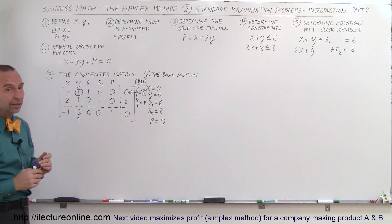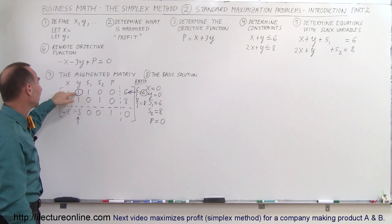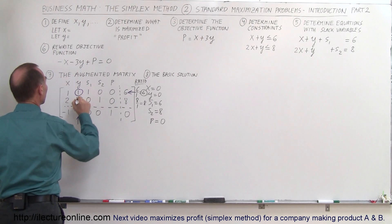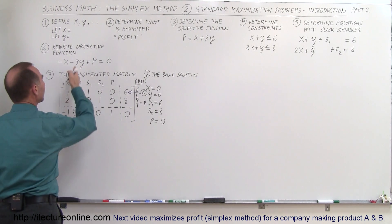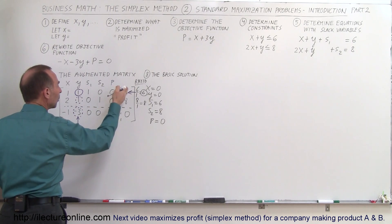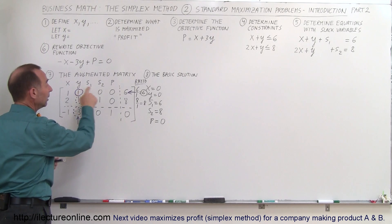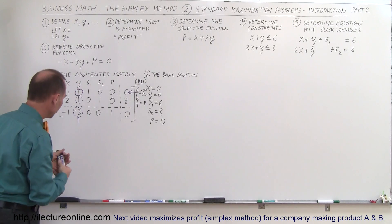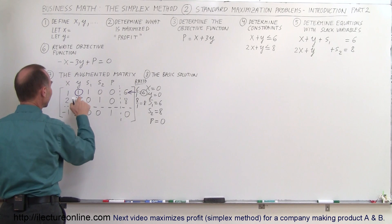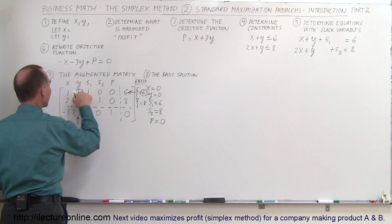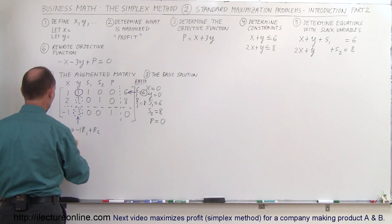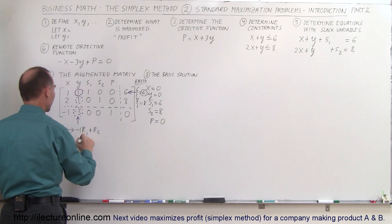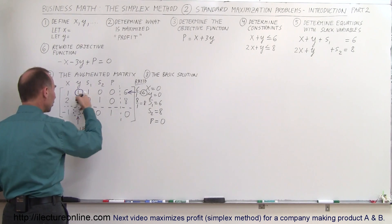Since the pivot element is already 1, we don't need to divide the row. Next, we eliminate the other entries in the pivot column. We replace row 2 with negative 1 times R1 added to R2, and replace row 3 with positive 3 times R1 added to R3. This will make those two numbers go to zero, which is the objective.